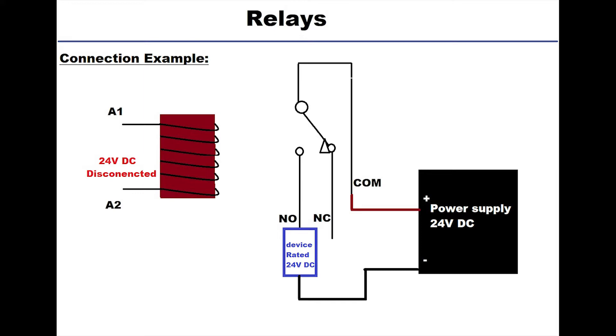Now the NO portion is also free on the first side and on the second side it's connected to a device which is rated at 24 volt DC. This device is connected to the negative terminal of the power supply. As you can see, the device is only connected to the negative terminal. If we short circuit from the positive terminal to the NO, we're going to get a full circuit. What's missing here is the positive terminal and that's the role of the relay.